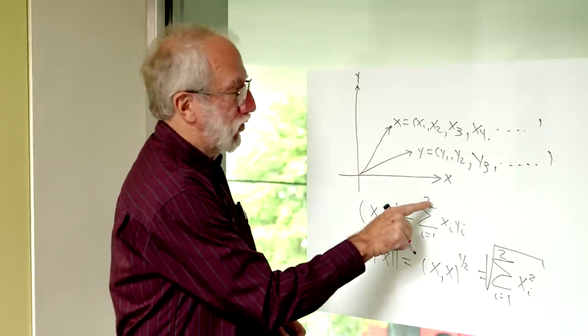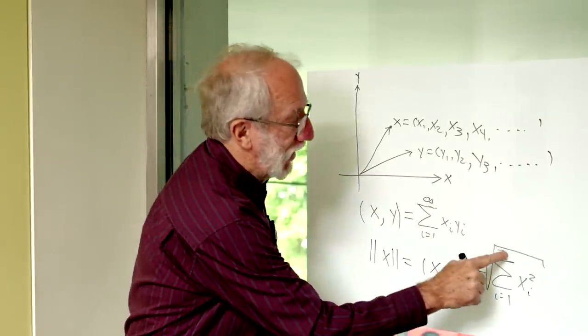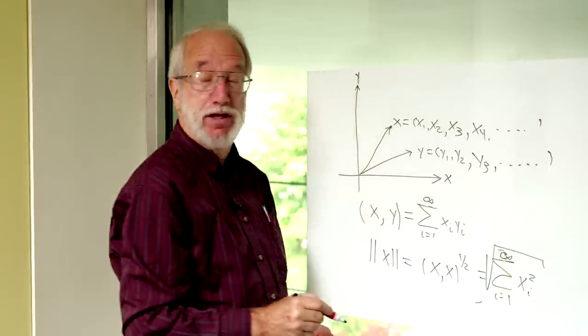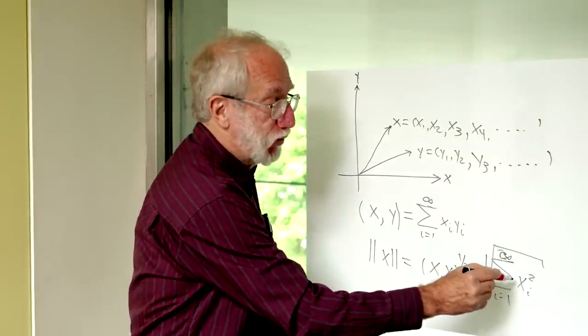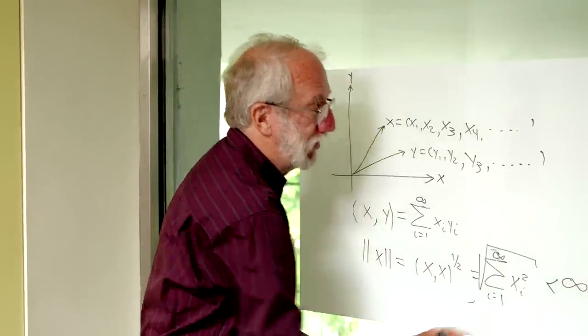Now, the dot product, of course, has to sum all of these out to infinity, and the length has to be summed all the way out to infinity, and we have the condition that the sum of the squares of all the coordinates has to be bounded, or it's less than infinity.